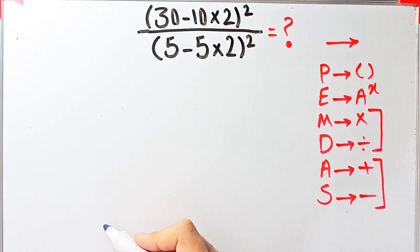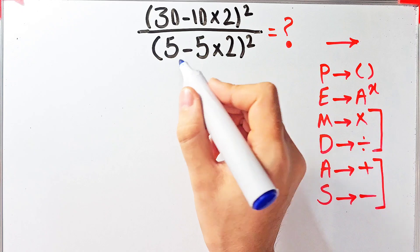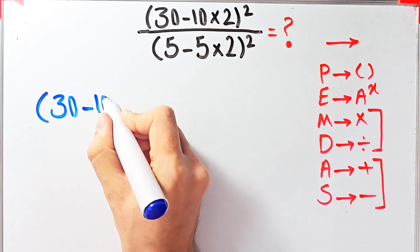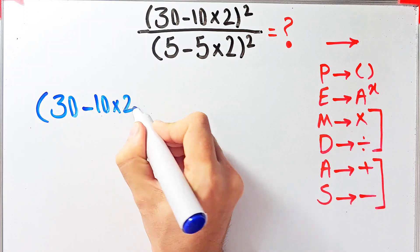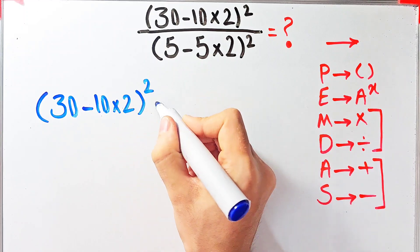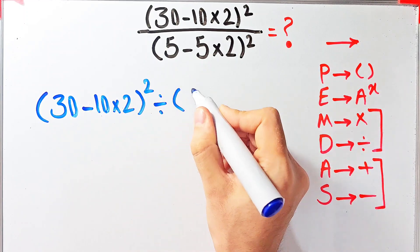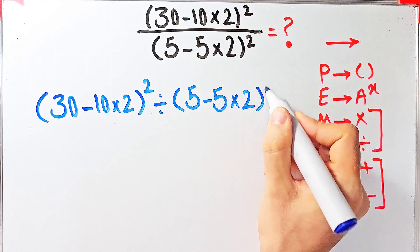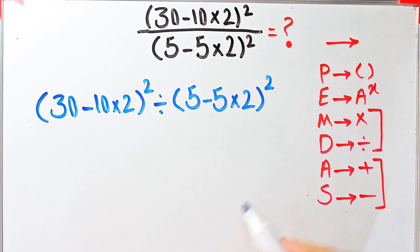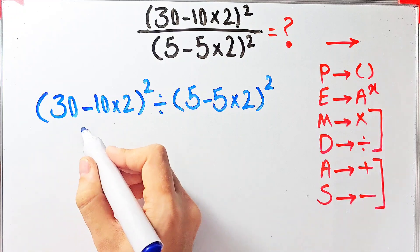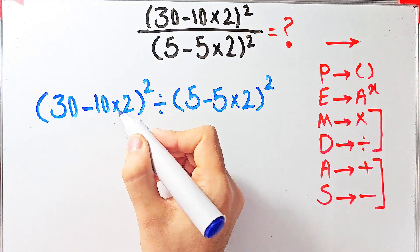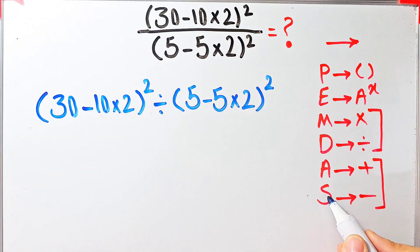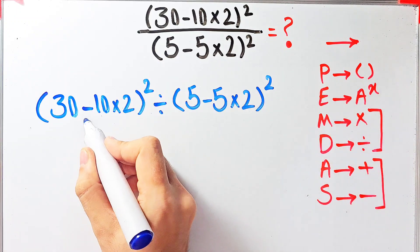The question is: 30 minus 10 times 2, all to the power of 2, divided by 5 minus 5 times 2, all to the power of 2. According to the PEMDAS rule, first we simplify the parentheses. Inside the first parentheses we have subtraction and multiplication — we do the multiplication first because it has higher priority than subtraction.